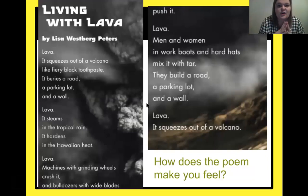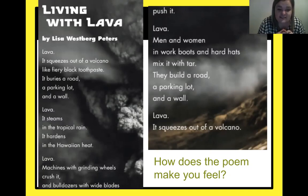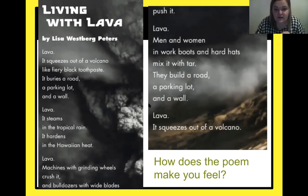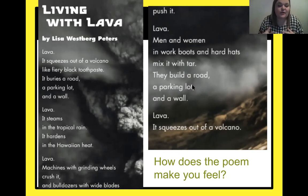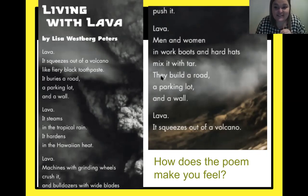So we're starting off with a little poetry today — it's called 'Living with Lava.' Lava, it squeezes out of a volcano like fiery black toothpaste. It buries a road, a parking lot, and a wall. Lava — it steams in the tropical rain, it hardens in the Hawaiian heat. Machines with grinding wheels crush it, and bulldozers with wide blades. Men and women in work boots and hard hats mix it with tar. They build a road, a parking lot, and a wall. Lava — it squeezes out of a volcano. A lot of poetry makes you feel something — that's what's really cool about it. How did this poem make you feel, fourth graders? There are some good ideas, some good emotions there.